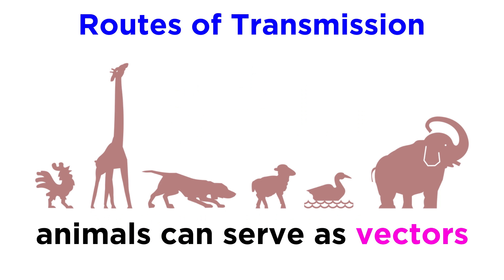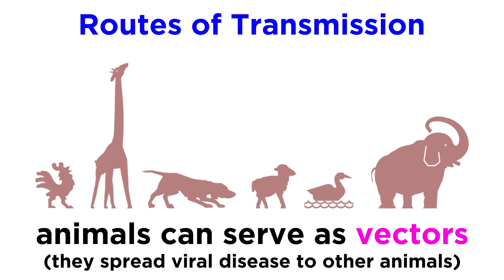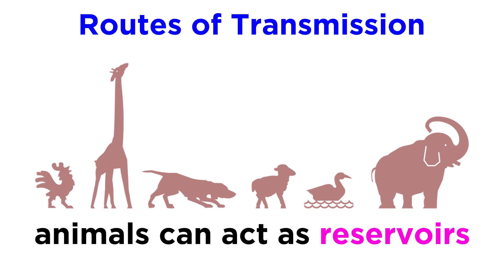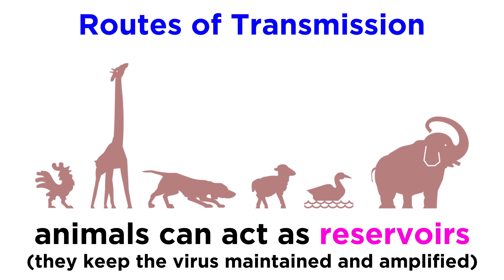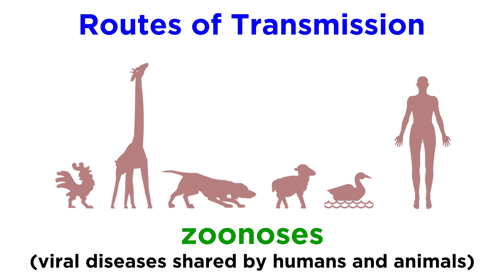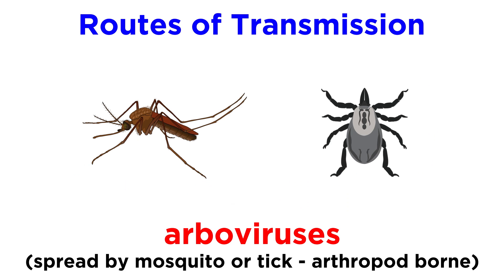Similarly to how it works with bacteria, animals can serve as vectors that spread viral disease to other humans and animals. They can also be reservoirs, meaning they keep the virus maintained and amplified in their environment. Zoonoses refers to viral diseases that are shared by humans and animals. Viruses that are spread by mosquito or tick are referred to as arboviruses, because they're arthropod-borne.